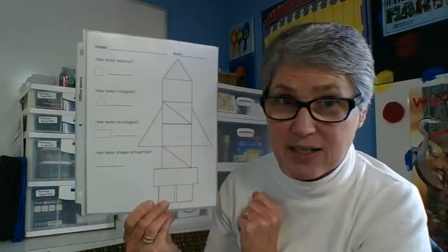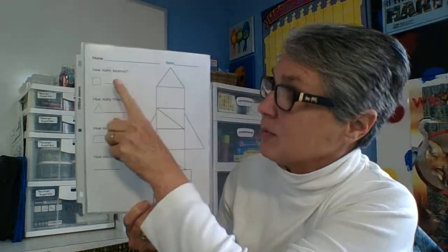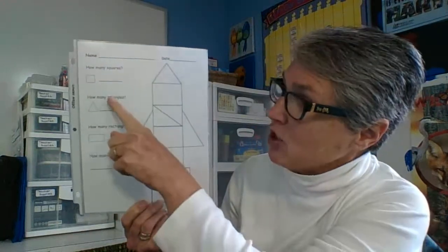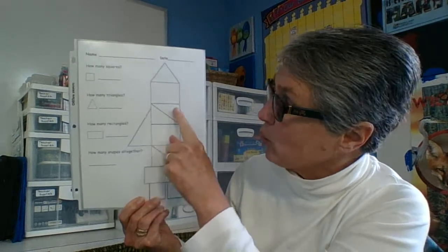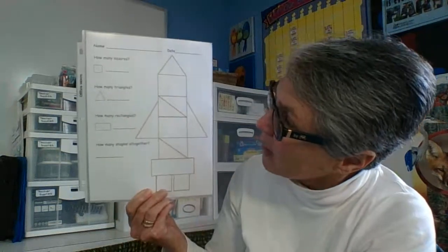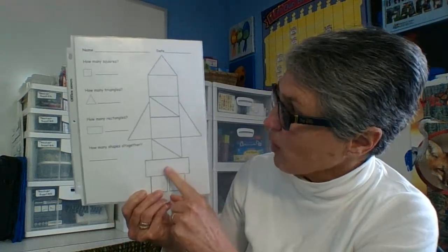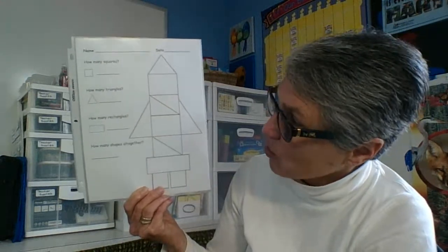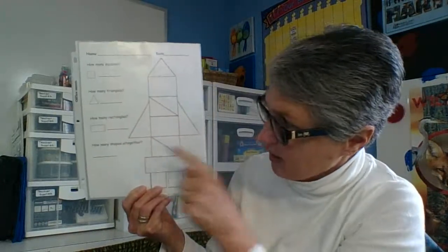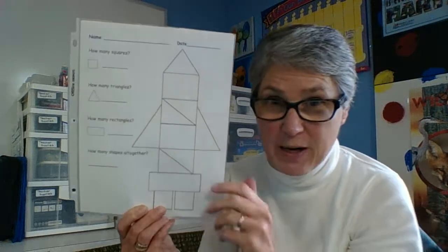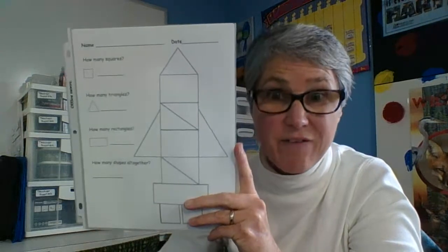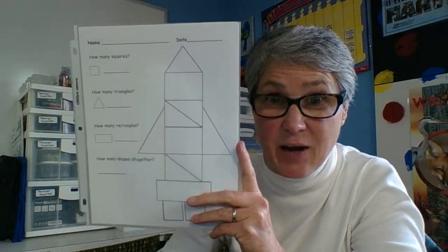There are some questions on the side. It says: how many squares? Count up the squares you've used and write the number. How many triangles? Count all the triangles used on your spacecraft and write the number. How many rectangles? Find the rectangles used on your spacecraft and write the number. And then how many shapes altogether — write the number. All right scientists, go and have fun matching the correct shapes to build a vehicle that will travel into outer space.